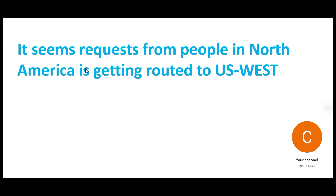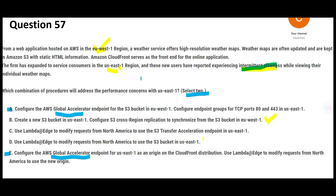There is a suspicion that people in North America — maybe in Massachusetts or Boston — have their requests being routed to US West. We need to fix this so they are routed to US East instead. Option D uses Lambda@Edge to modify the request from North America to use the S3 bucket in US East instead of US West. Now you might ask — but all the files are in US West. However, since we applied cross-region replication, the files are also now in US East.